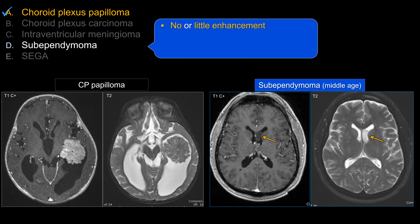Another adult disease is subependymoma. This is a good board exam question in that many intraventricular masses tend to enhance quite avidly — so the key signature of subependymoma is that they tend not to enhance, or enhance very little. That's relatively unique among intraventricular neoplasms. Typically they occur in the lateral ventricle and are often incidental findings, discovered when a patient comes in for another reason such as headache or a car accident CT. Age is important when you prioritize your differential diagnosis.